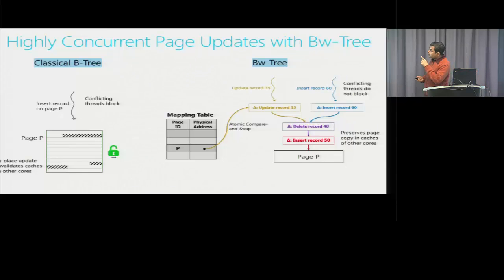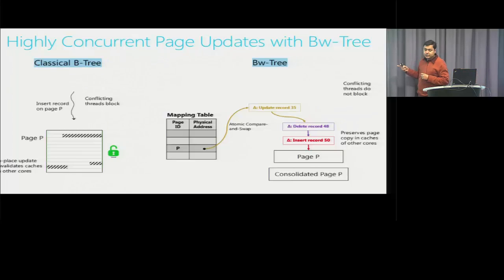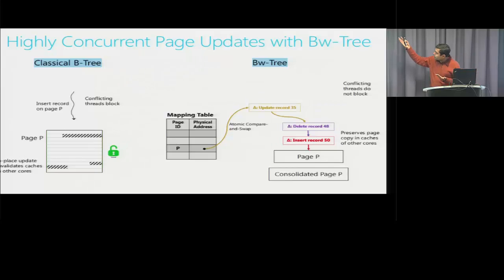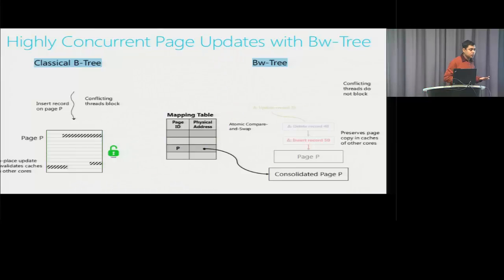As delta records accumulate on a page, lookup performance suffers due to the growing chain. Periodically, based on configurable thresholds, accesses will consolidate all the delta records into the base page to create an efficient consolidated representation. This consolidation is also installed using compare-and-swap. If it fails, the next accessor can try it.